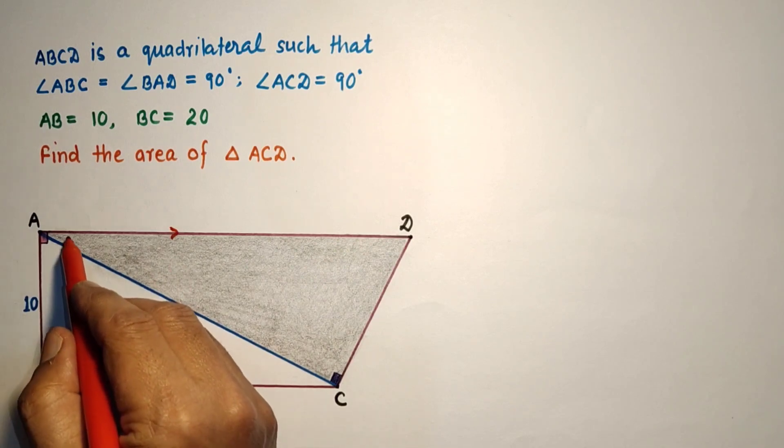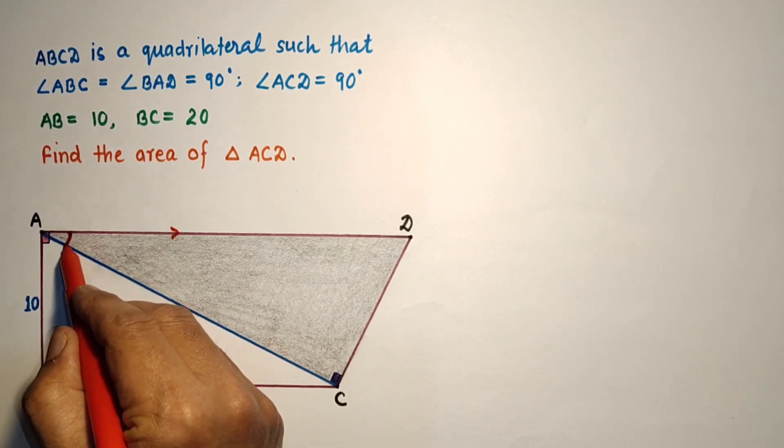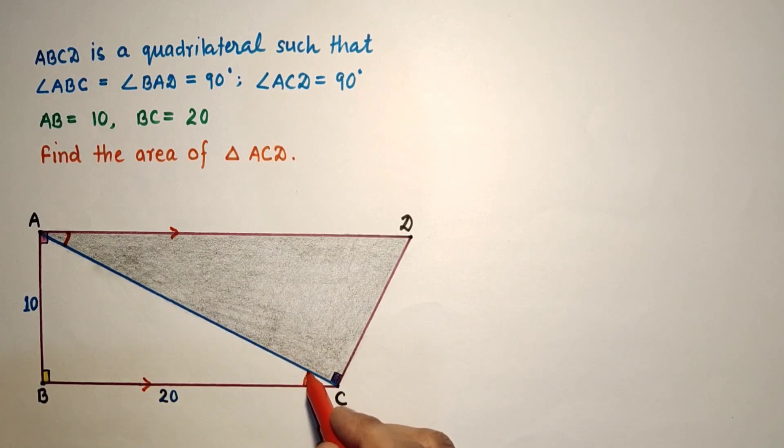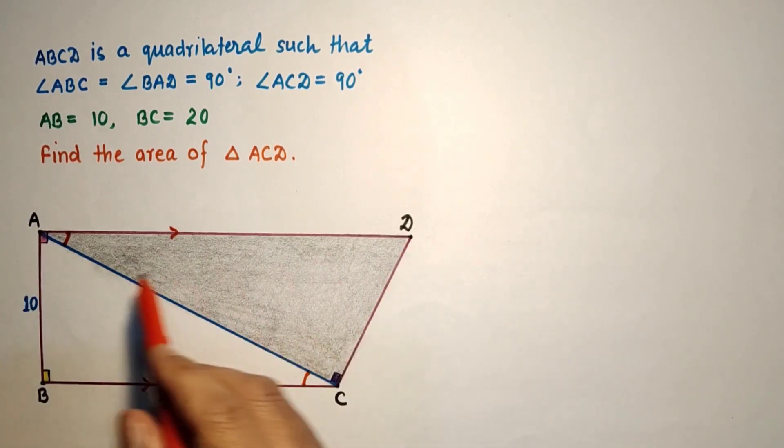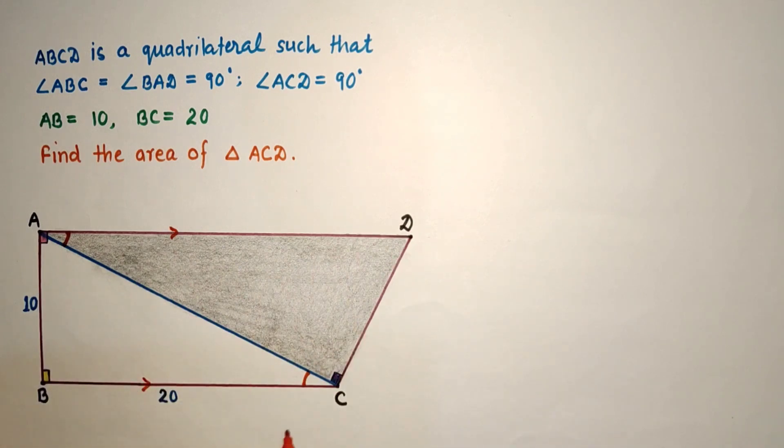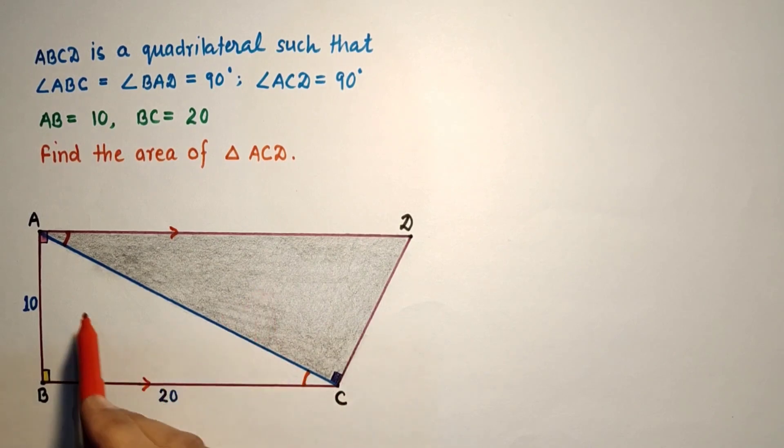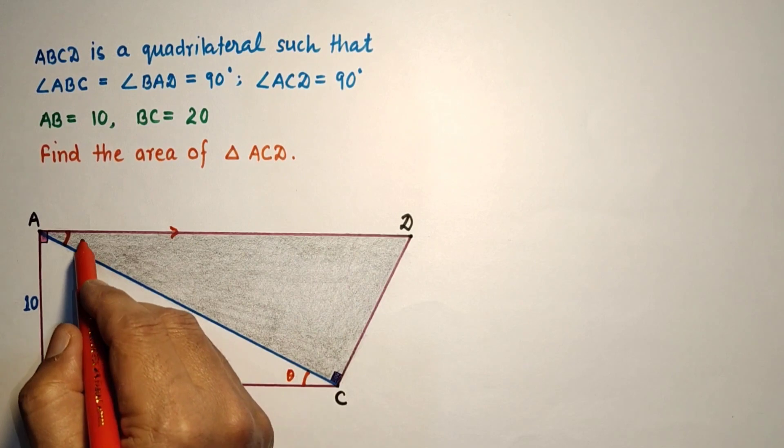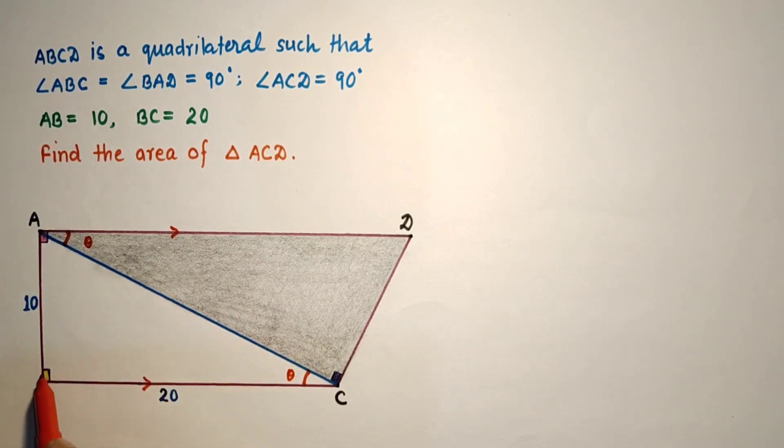And if this is parallel, then alternate angles are equal. If this is theta, this will also be theta.